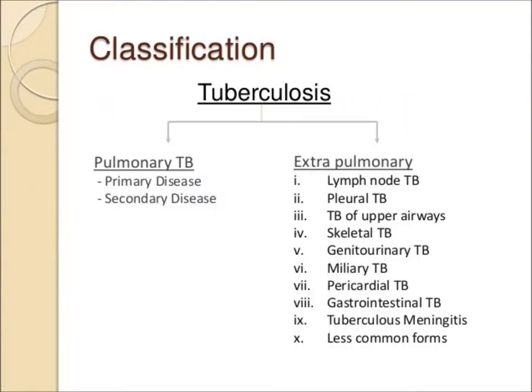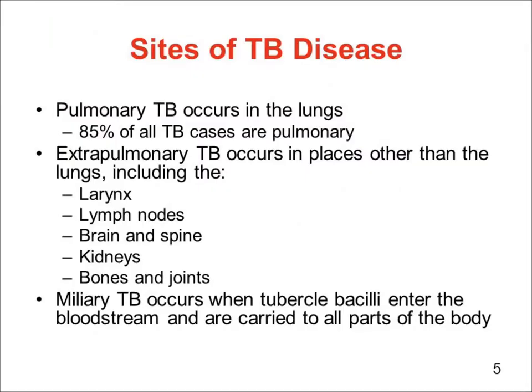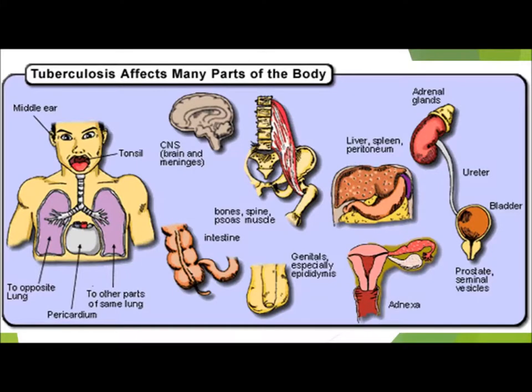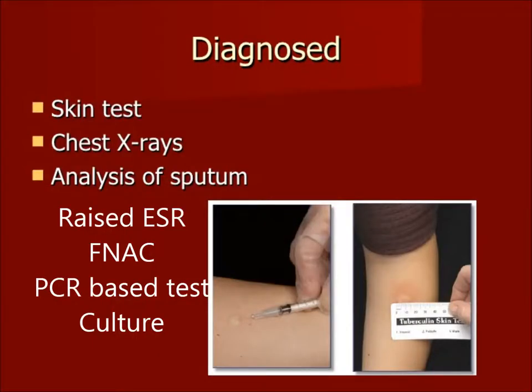Tuberculosis can be pulmonary and extra-pulmonary. Any organ in the body can be affected by Mycobacterium tuberculosis: lungs, lymph nodes, CNS, intestine, gonads, bones, renal system, spleen, and liver. It can be diagnosed by skin test, chest X-rays, analysis of sputum, CBC showing raised ESR, fine needle aspiration cytology, PCR-based tests, and culture, which is the gold standard.